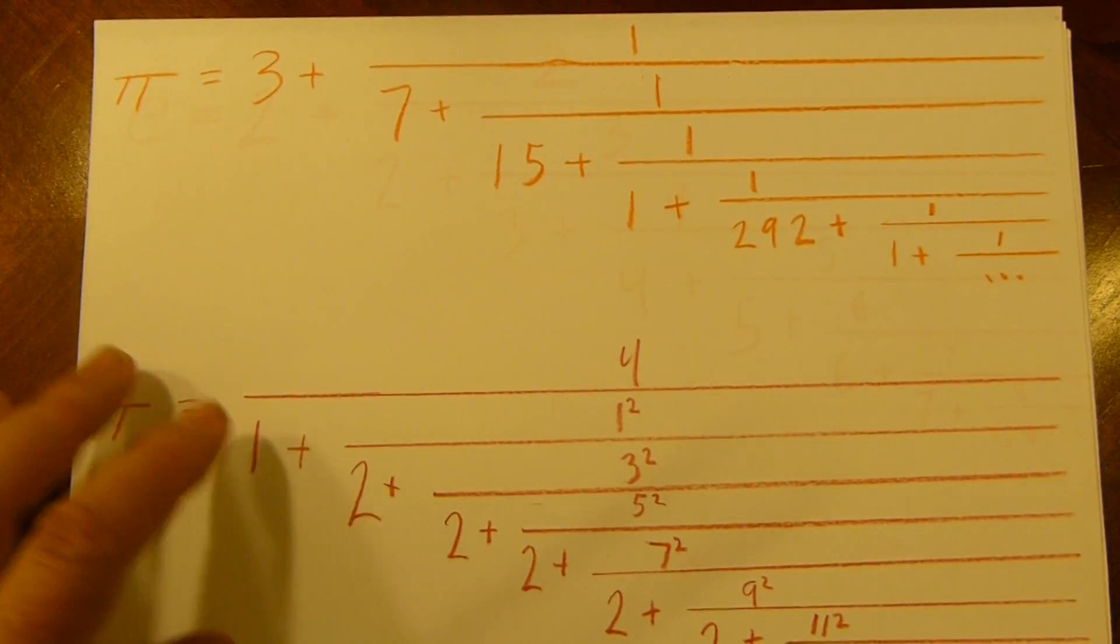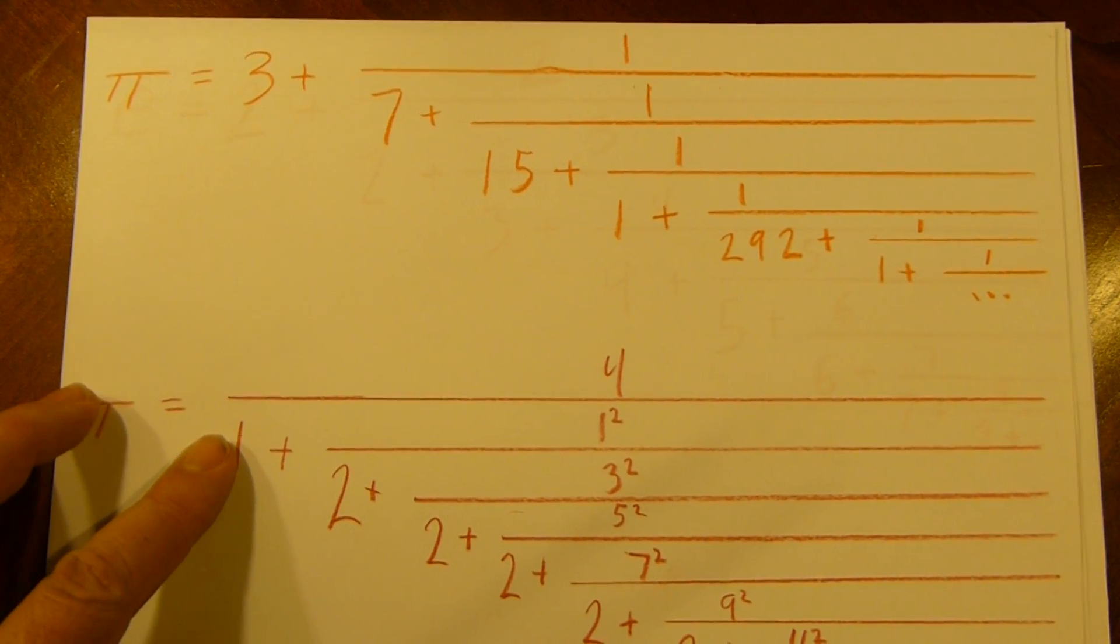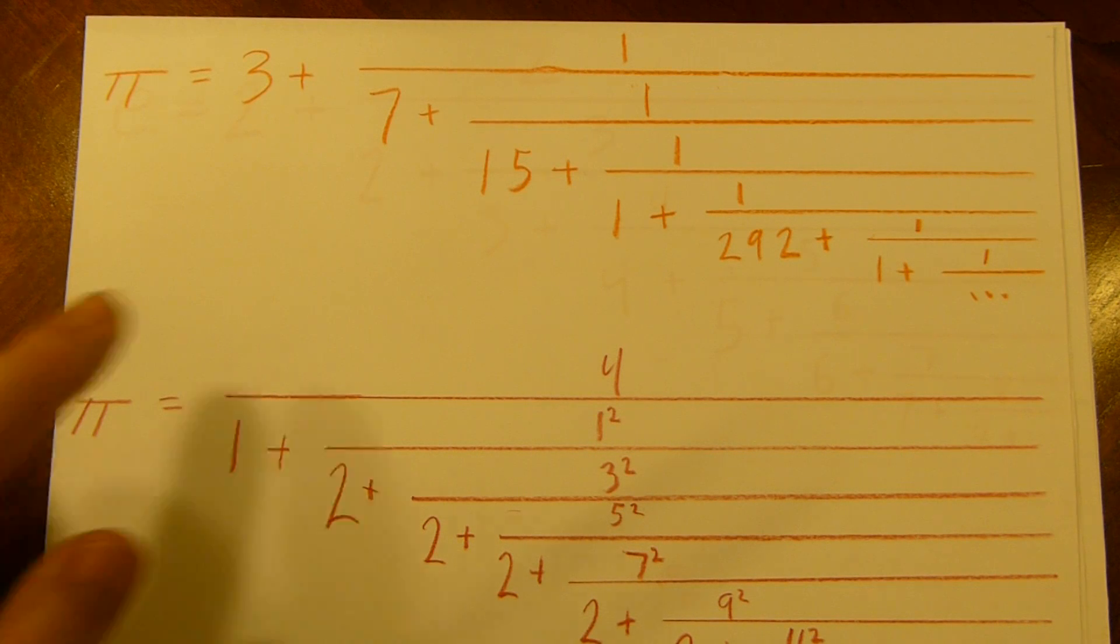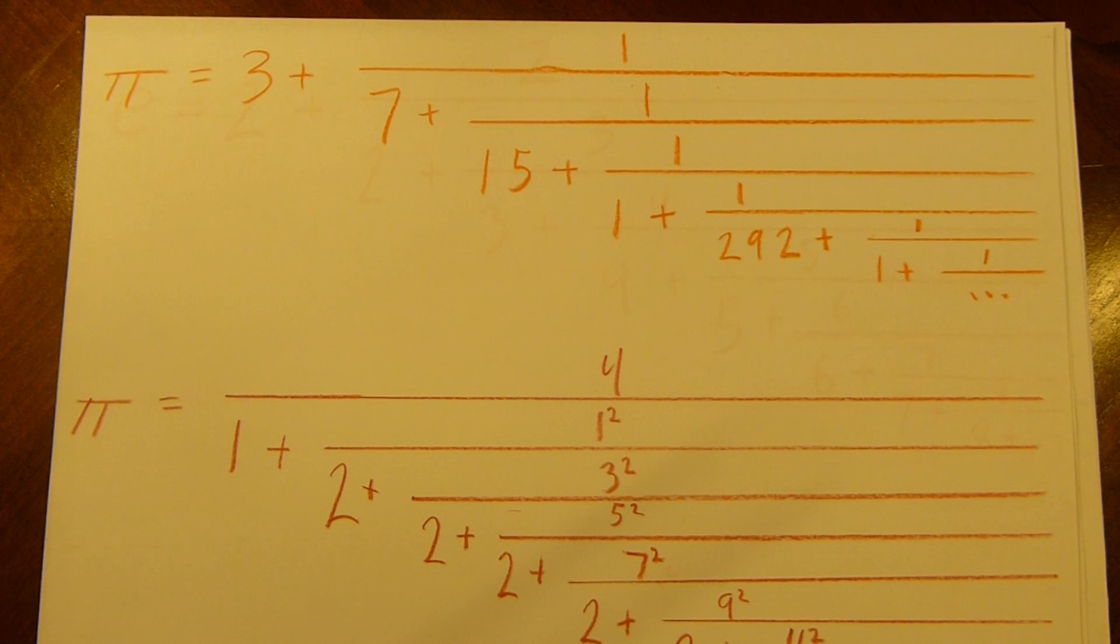Let's take a look at another one. Here we have pi. I have two different ones. This top one is, I'll explain in just a moment, a simple continued fraction. And pi doesn't have a really pretty simple continued fraction.